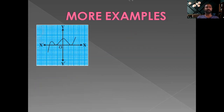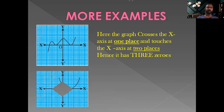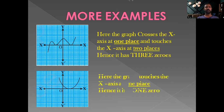In another example, the graph crosses the x-axis at one place and touches the x-axis at two places — collectively there are three zeros. In one more example, the graph does not cross the x-axis but touches it at one place, so the polynomial has one zero.